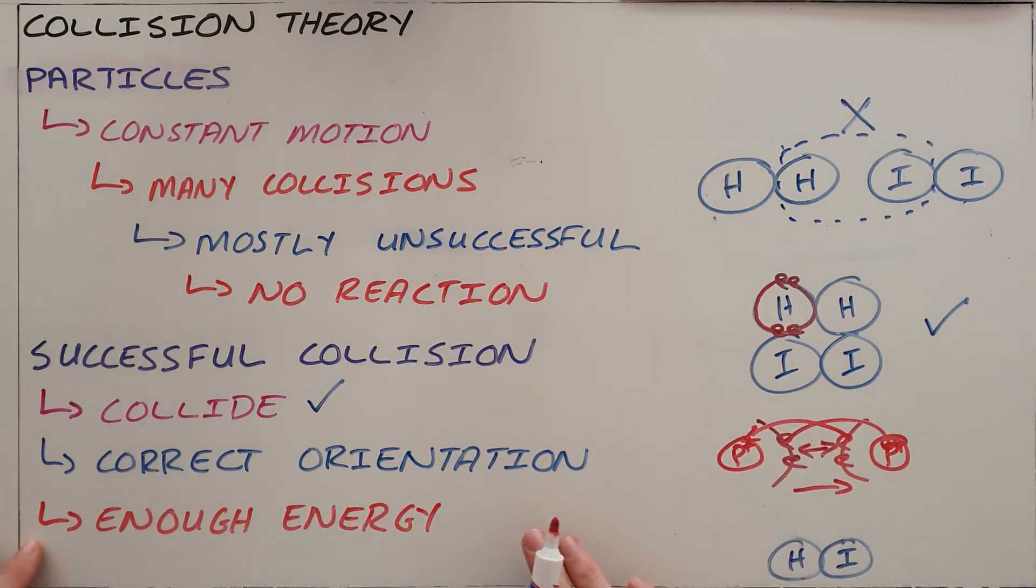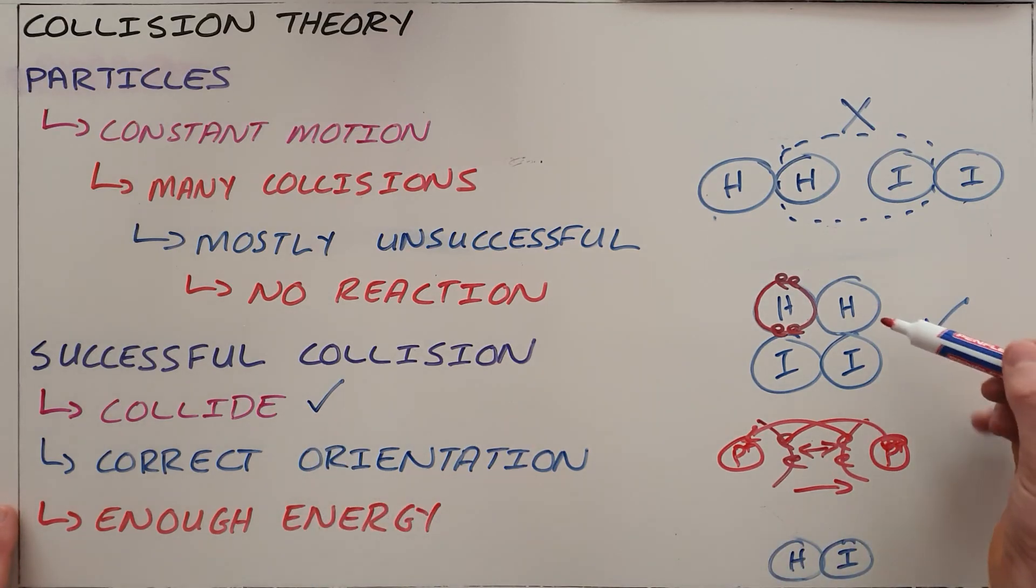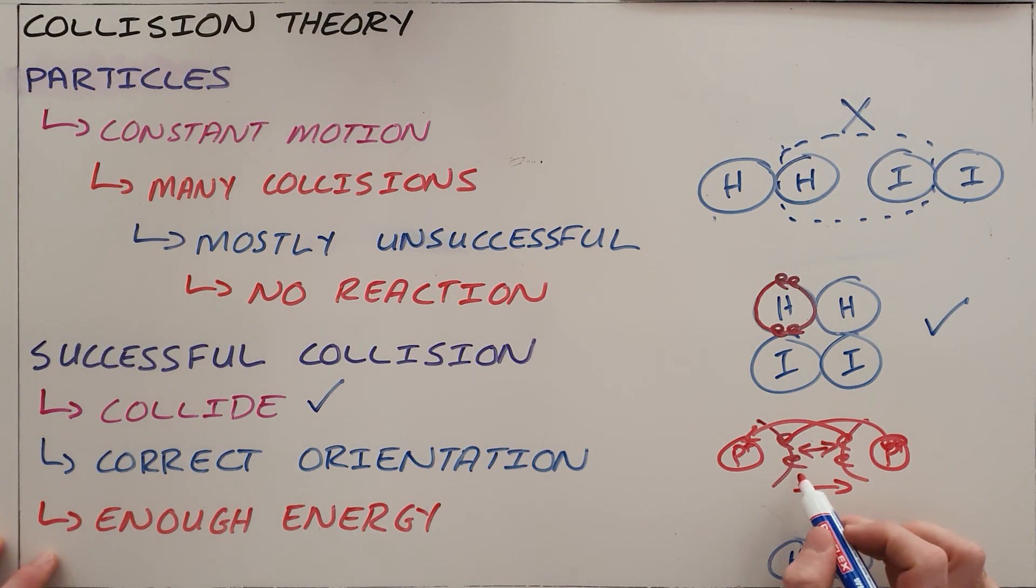In order for a successful collision to occur, firstly, the molecules must collide. Secondly, they must collide in the correct orientation so that a bond is capable of forming for all atoms. And finally, they must collide with enough energy to overcome what's called the electrostatic force of repulsion between each atom's electron cloud.